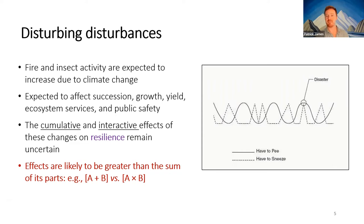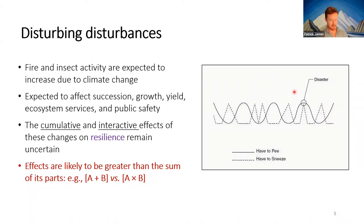I found a simpler version of this — a 'have to sneeze' graph — where each one of these things on their own is fine, but when the two of them occur at the same time, there's a problem.